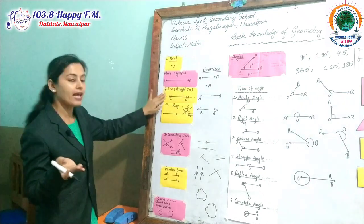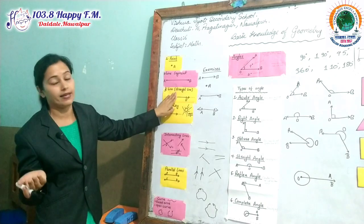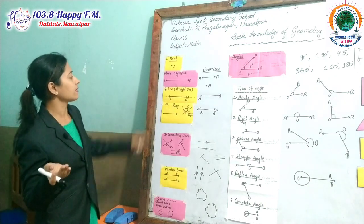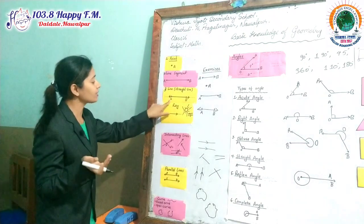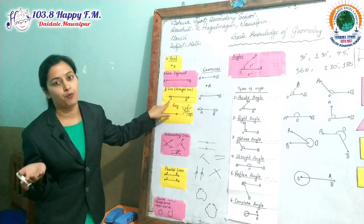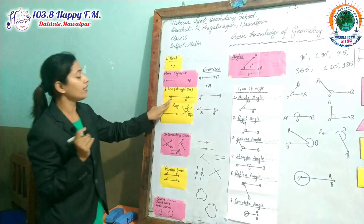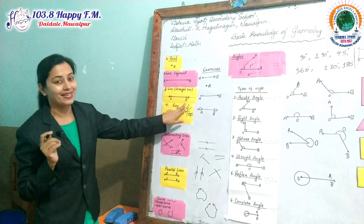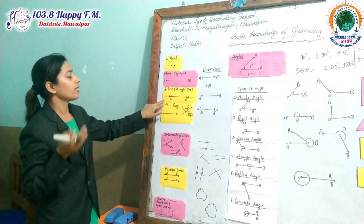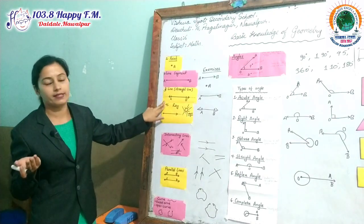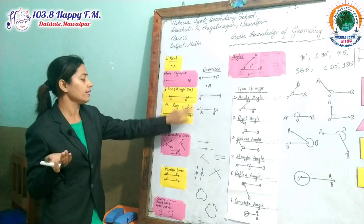The next topic is line, also called straight line. Just opposite of line segment is line. Here there is no fixed ending point — it can be extended. I have given the name A and B, but it is not fixed. The line segment is fixed, but the line is not fixed. It can be extended, so it is called a line or straight line.